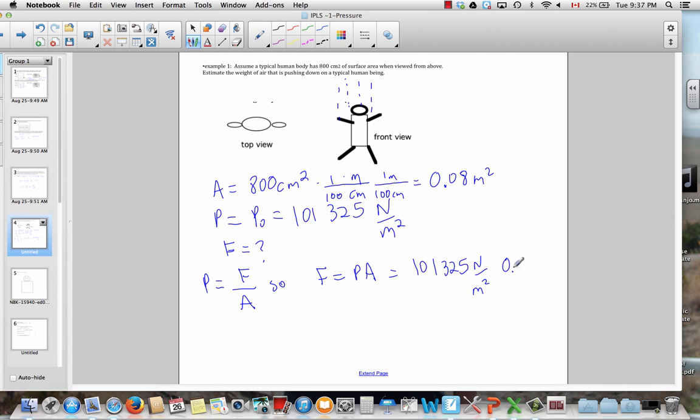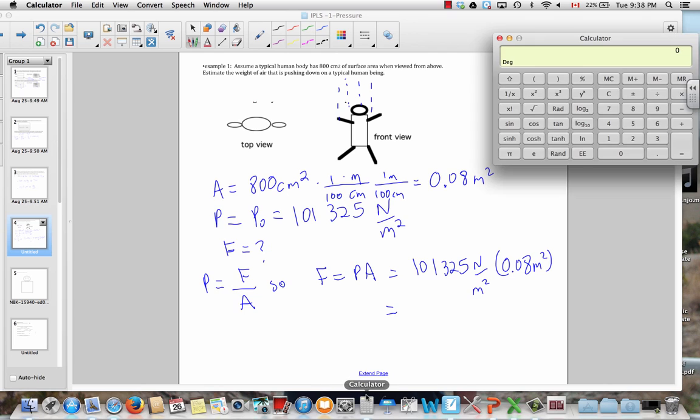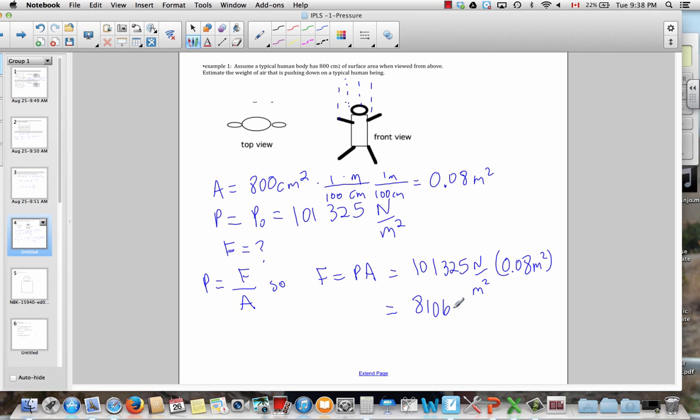So, we put in that area 0.08 square meters. And then we multiply that through. So, it's 101,325 times 0.08. It's 8106. 8106. And dimensionally, square meters cancel. So, that's newtons. So, that's the weight that you're carrying around. The weight of air that you're carrying around on your shoulders. 8,000 newtons. That's equivalent to about 800 kilograms. That seems like quite a lot.